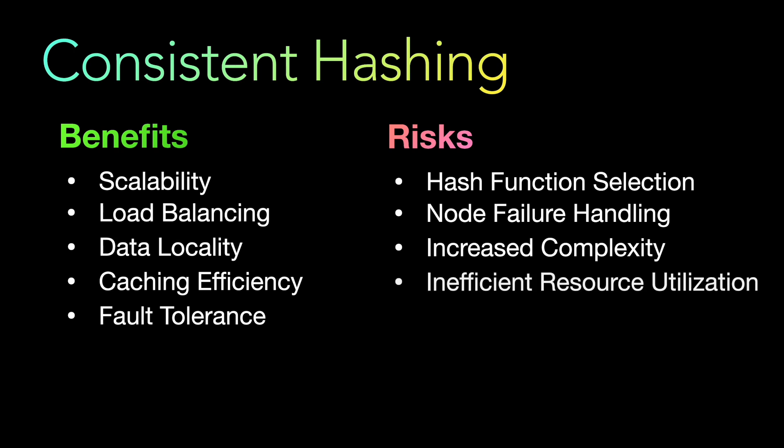Last is inefficient resource utilization. In certain cases, consistent hashing may result in suboptimal resource utilization. For example, if the number of nodes in the system is significantly smaller than the number of segments on the ring, there may be an imbalance between the resources allocated to each node and the actual workload or data distribution. Some nodes may be underutilized while others are overloaded, leading to inefficient resource allocation and potential performance issues.